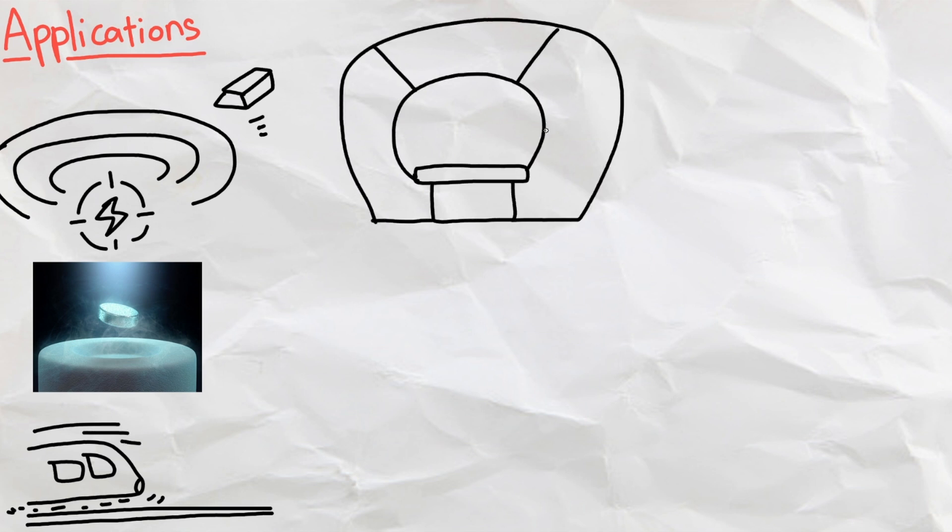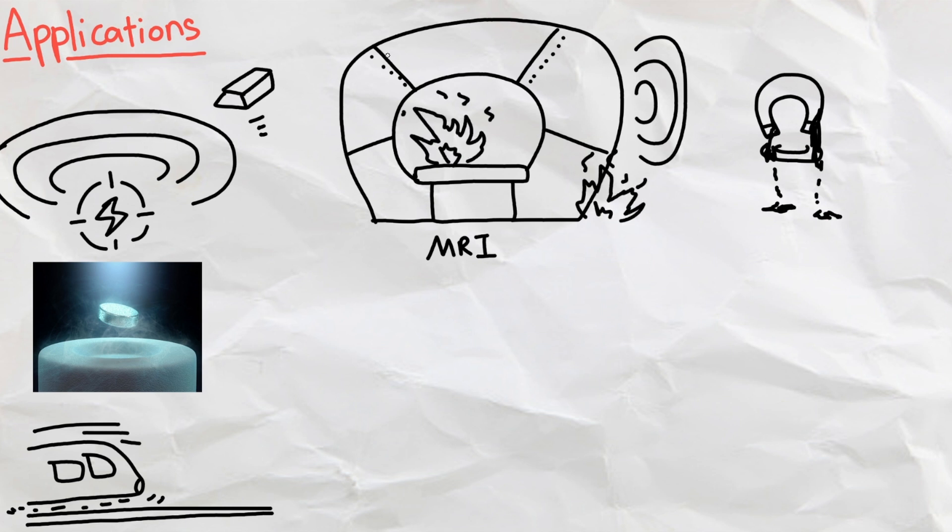Another use for superconductors is in machines, such as MRI machines that perform brain scans, that need to generate strong magnetic fields without melting the equipment, since this process can easily create a lot of resistance and heat.